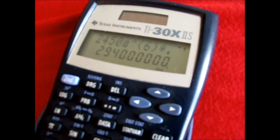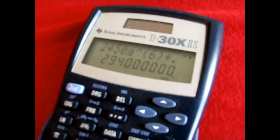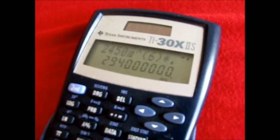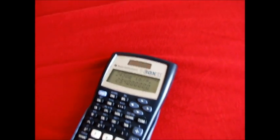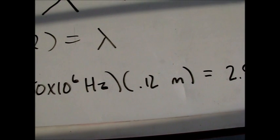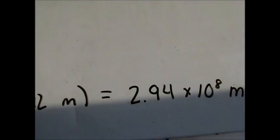Okay, so you guys have to trust me that's the right amount of zeros. It's 2.94 times 10 to the 8th meters per second. Using our calculations we found out that our speed of light was 2.94 times 10 to the 8th meters per second.